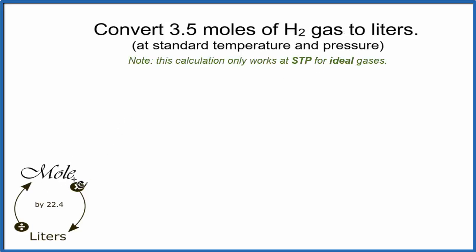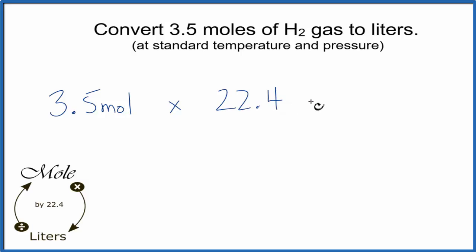We're going from moles to liters, so we multiply by 22.4. We have 3.5 moles. We multiply by 22.4. And the units are liters per mole. We'll worry about those in a bit. Do the math. 3.5 times 22.4, 78.4.